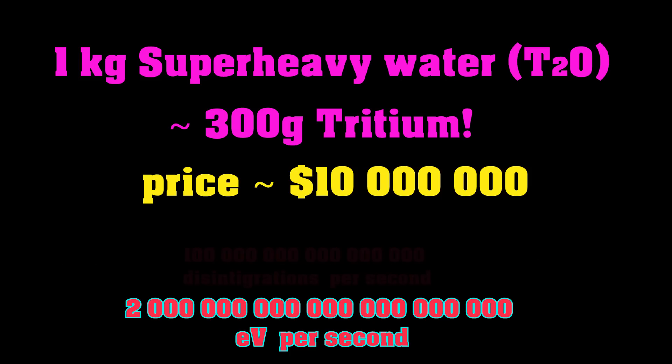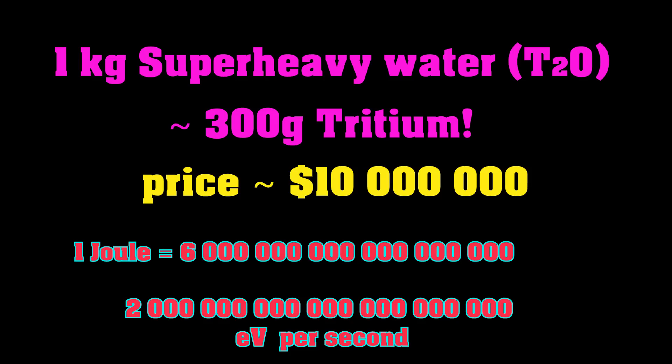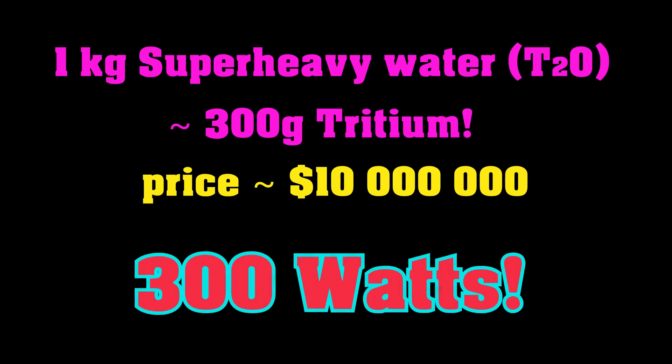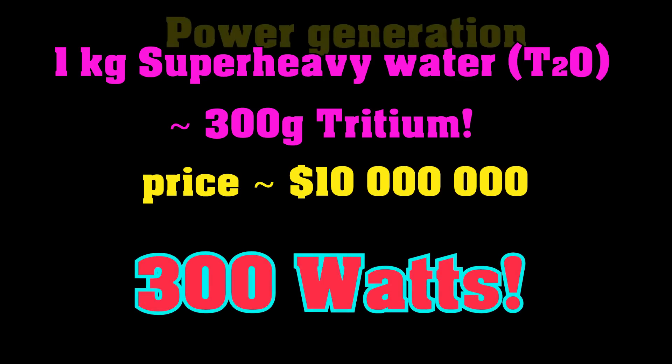But thankfully, we can convert this into something more accessible. So, one joule is about 6 to the power of 18 electron volts. A watt is, of course, just a joule per second, so it's just 6 divided by 2,000, which is about 1,000 divided by 3. It's about 300 joules per second, 300 watts. That's how much power our 1 kilo of super-heavy water will be generating.